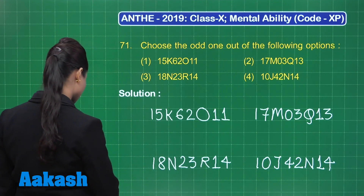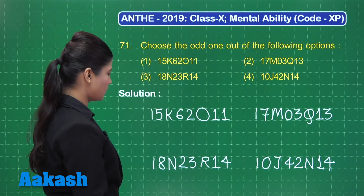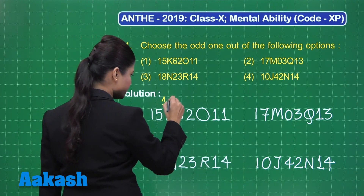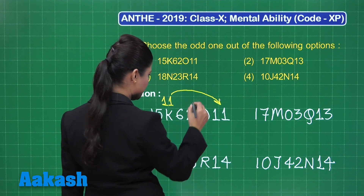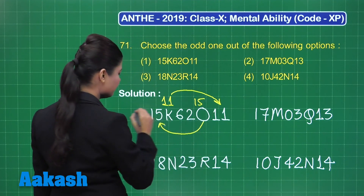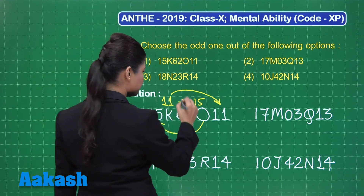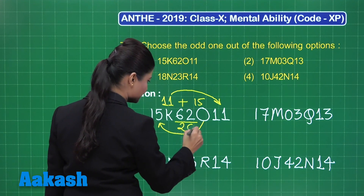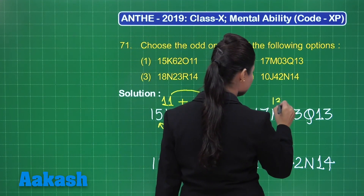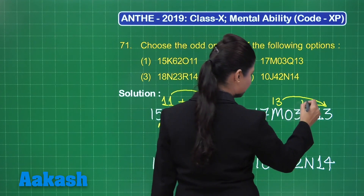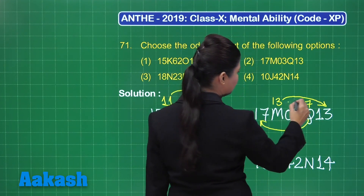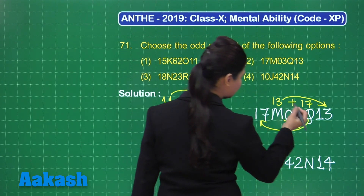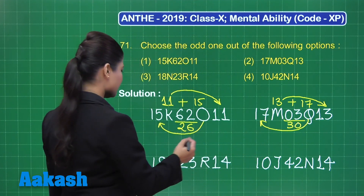Here we have alphabets as well as numbers, so there is some coding and pattern related to alphabet positioning. K comes at the 11th position and we have the number 11; O comes at the 15th position and we have the number 15. When we consider 11 plus 15, it gives the total as 26 — the reverse of which is 62. For M at 13th position and Q at 17th position, 13 plus 17 gives 30, and the reverse is 03.